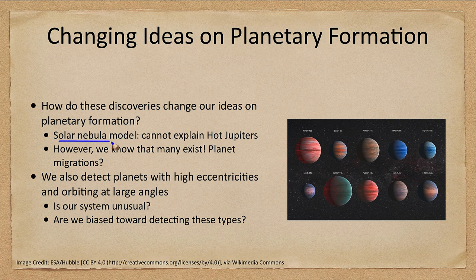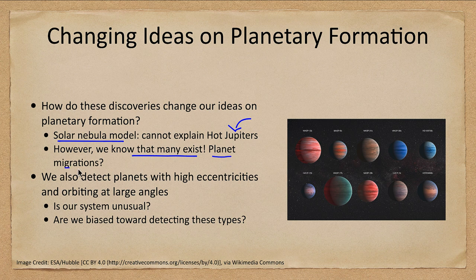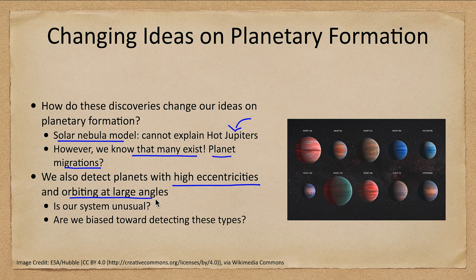How does this affect our ideas of how planets form? Our solar nebula model does not explain many of these things — how does it explain a Jupiter-sized planet forming close to a star? Under condensation sequences, Jupiter-type planets should not form close to a star. One thought is planetary migration — planets may not currently be where they formed. We also detect planets with high eccentricities and large orbital inclinations. We don't yet know whether our system is the unusual one or whether we are simply biased toward detecting these other types.